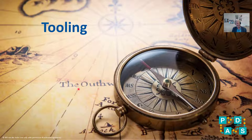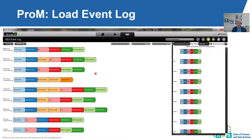More and more process mining tools support conformance checking. I will show both PROM (open source) and Solonis (commercial). Here is an example event log about order handling: over 12,000 traces, 80,000 events, eight unique activities. Almost 5,000 traces follow the pattern: place order, send invoice, pay, prepare delivery, make delivery, confirm payment.